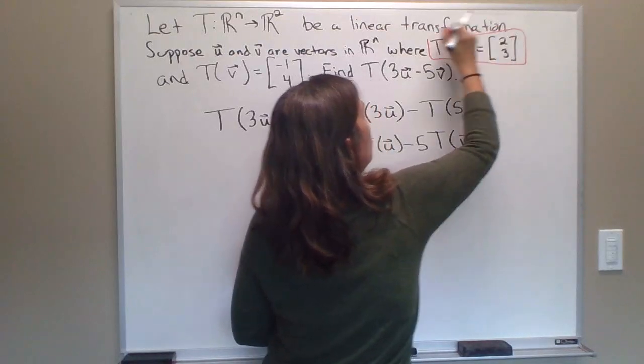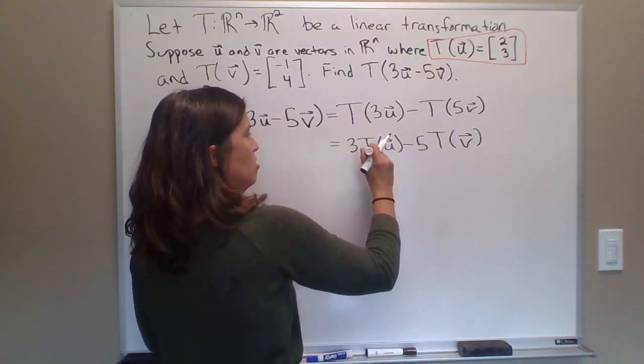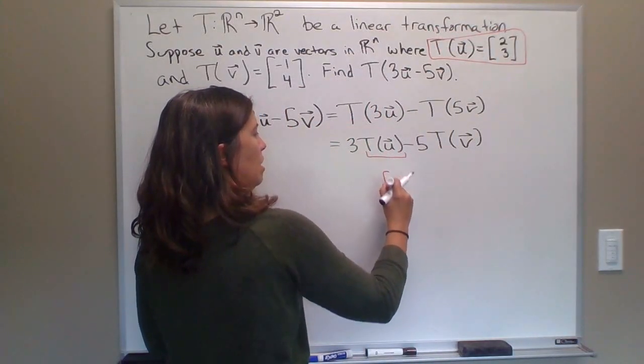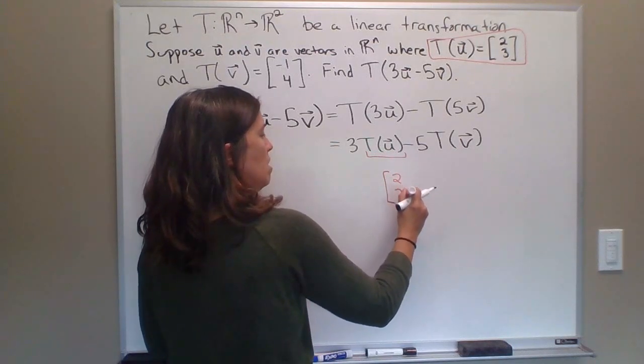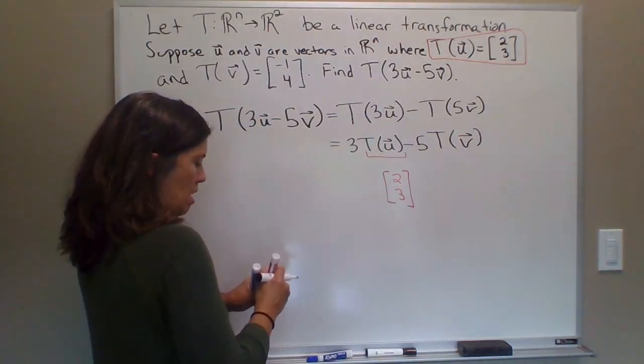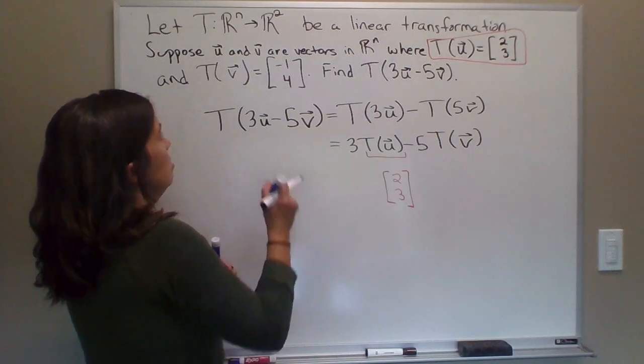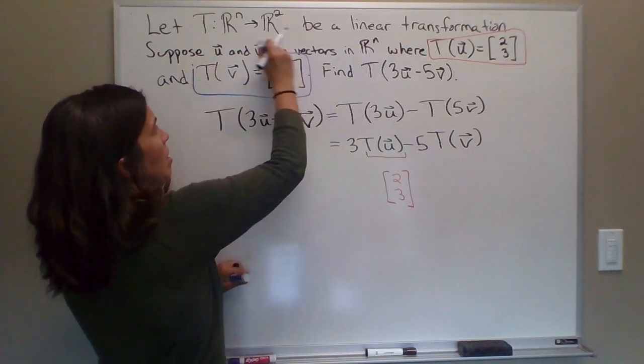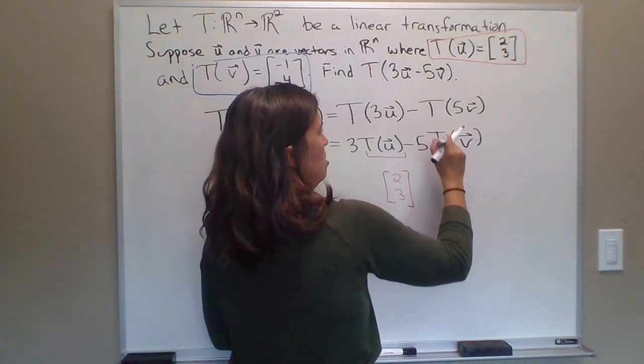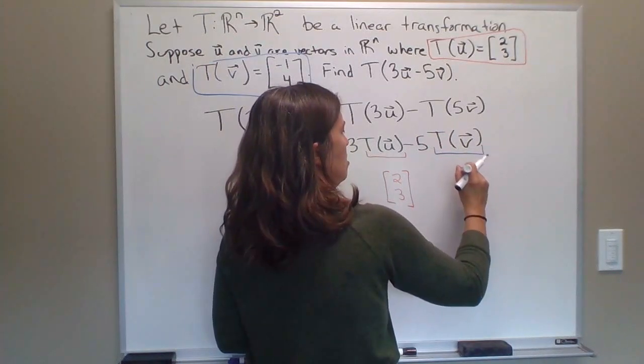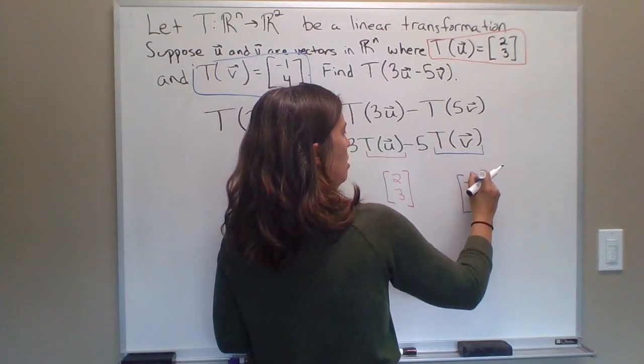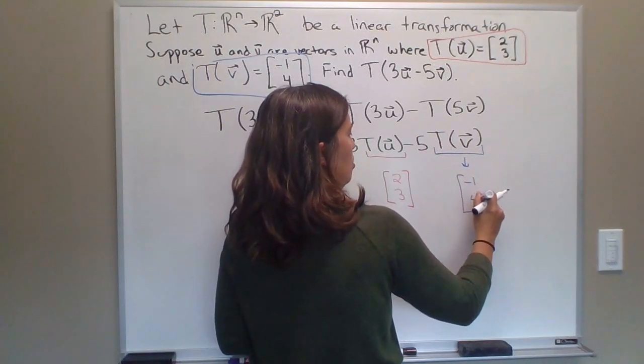T(u), I know that vector. That's [2,3]. So T(u) right here, that's equal to [2,3]. And T(v), that's [-1,4]. So the T(v) right here, that's equal to [-1,4].